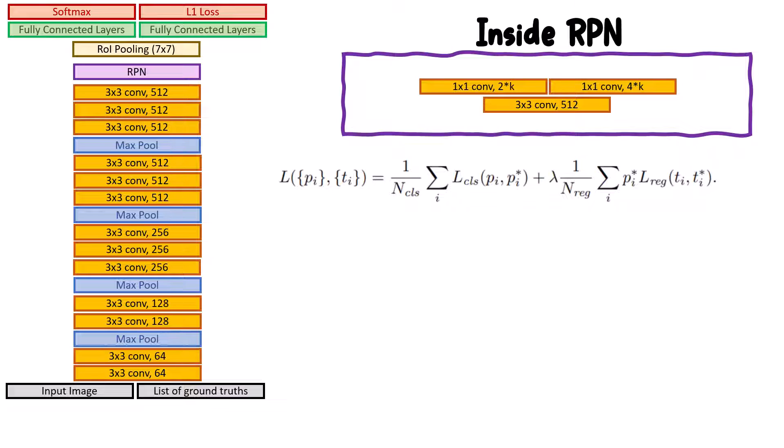For the regression loss, we have ti and ti star. ti is the output of our model, which says how much we should modify the x, y, width, and height. ti star is the ground truth. The formula for ti is the same as what we had in previous versions.